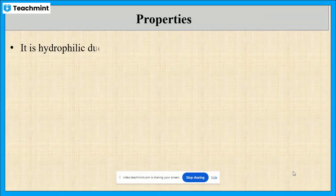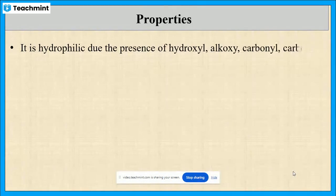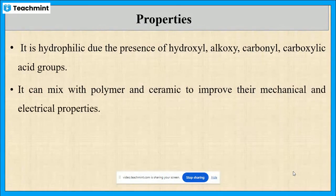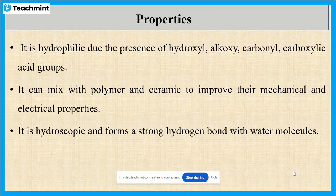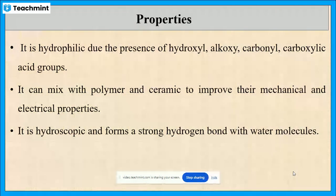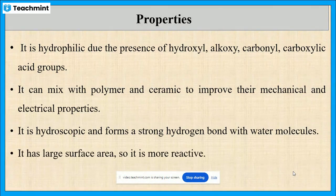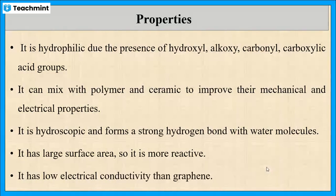Next, let us see the properties of graphene oxide. Graphene oxide is hydrophilic due to the presence of functional groups like hydroxyl group, alkoxy group, carbonyl group, and carboxylic acid groups. It can mix with polymer and ceramic to improve their mechanical and electrical properties. It is hygroscopic and forms strong hydrogen bonds with water molecules. It also has a large surface area, making it more reactive. Graphene oxide has low electrical conductivity compared to graphene.